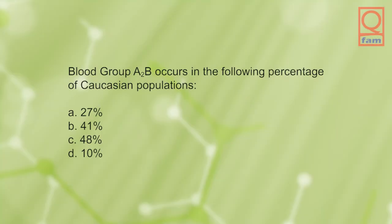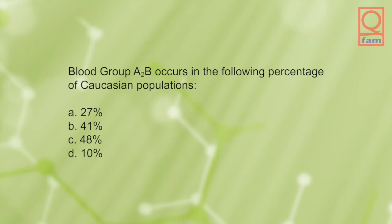Blood group A2B occurs in the following percentage of Caucasian populations: A) 27%, B) 41%, C) 48%, D) 10%. The answer is B, 41%.